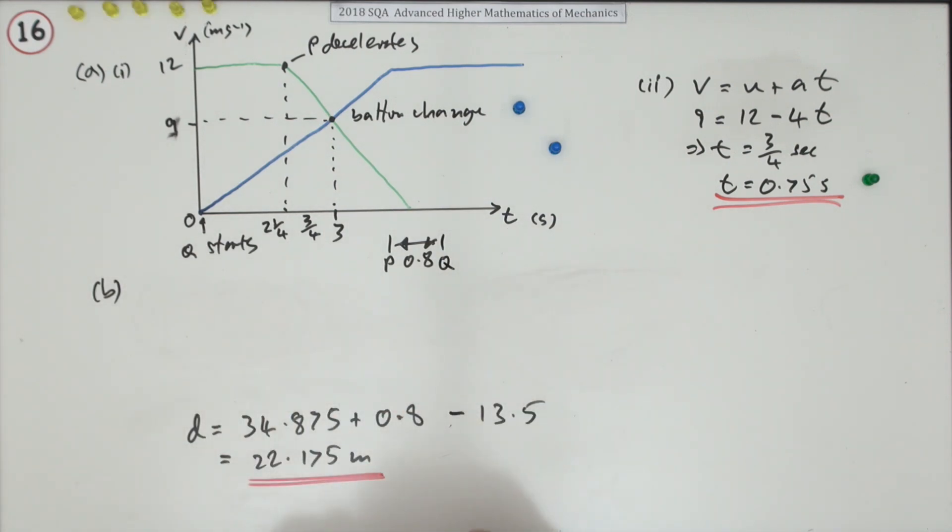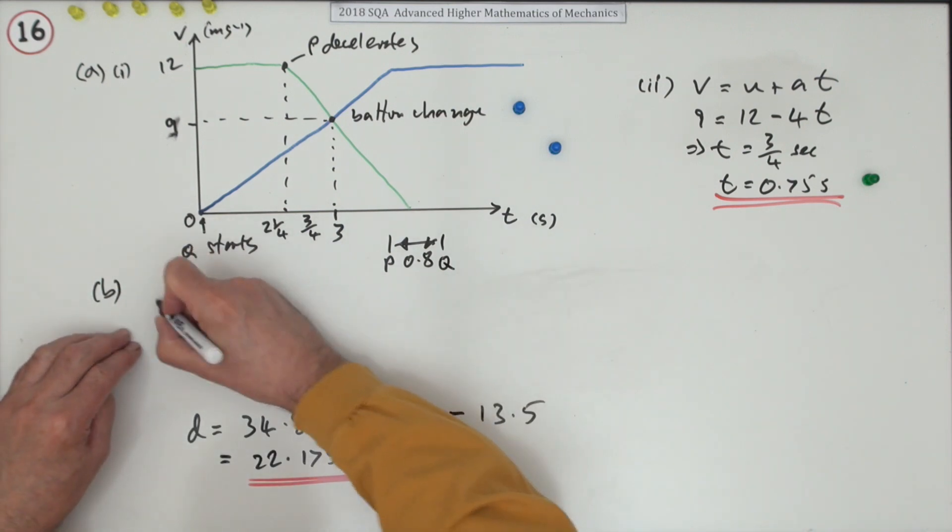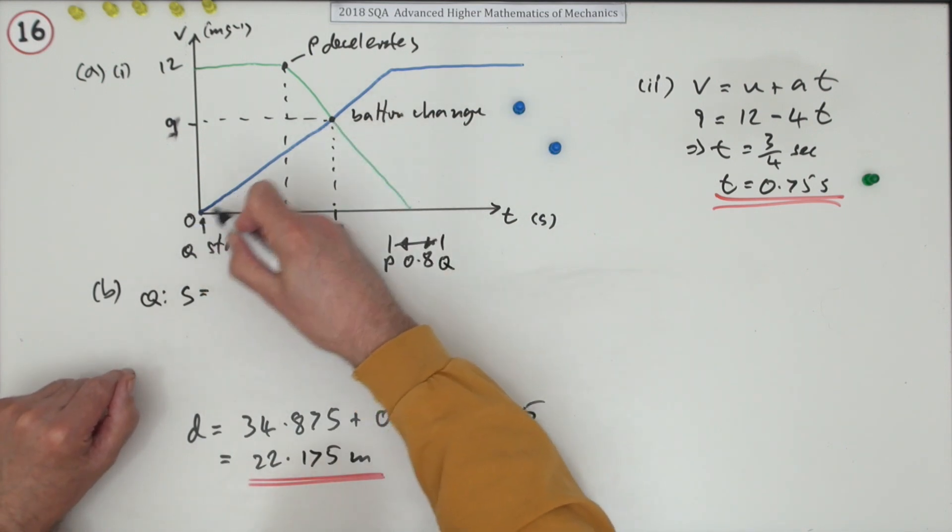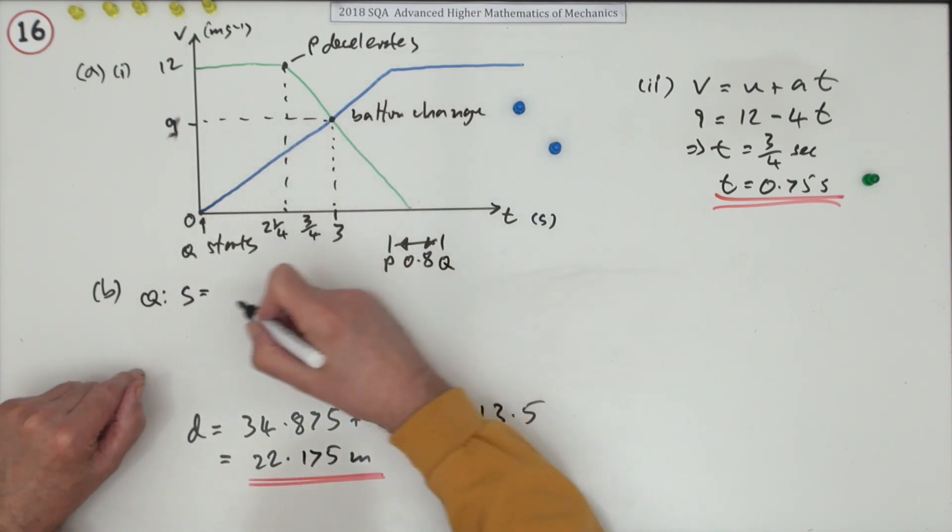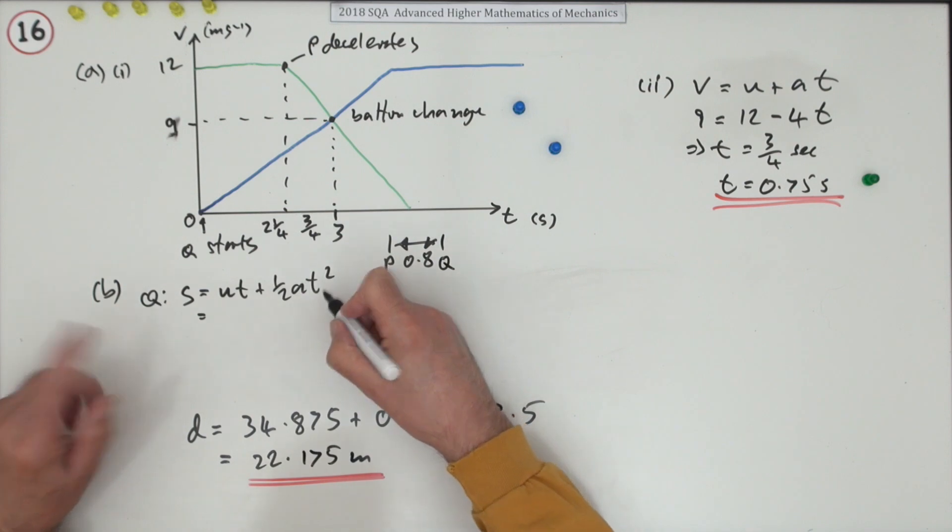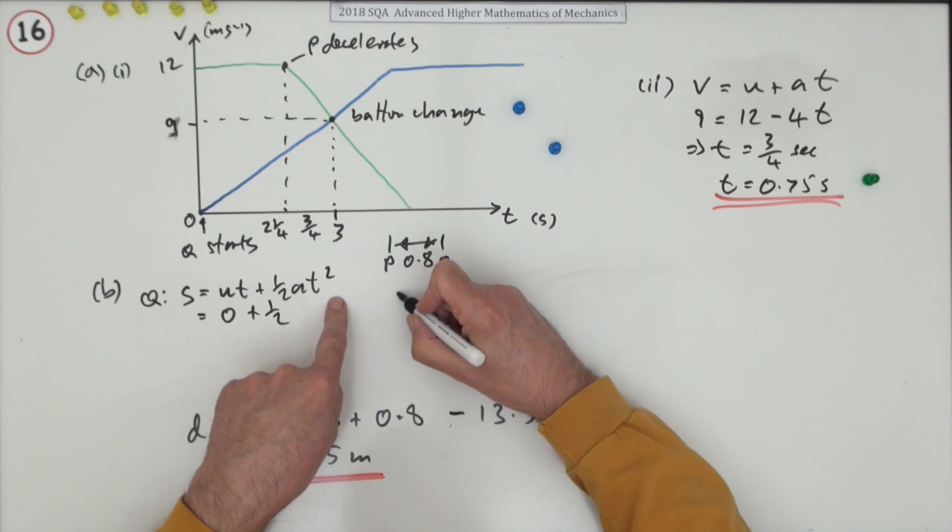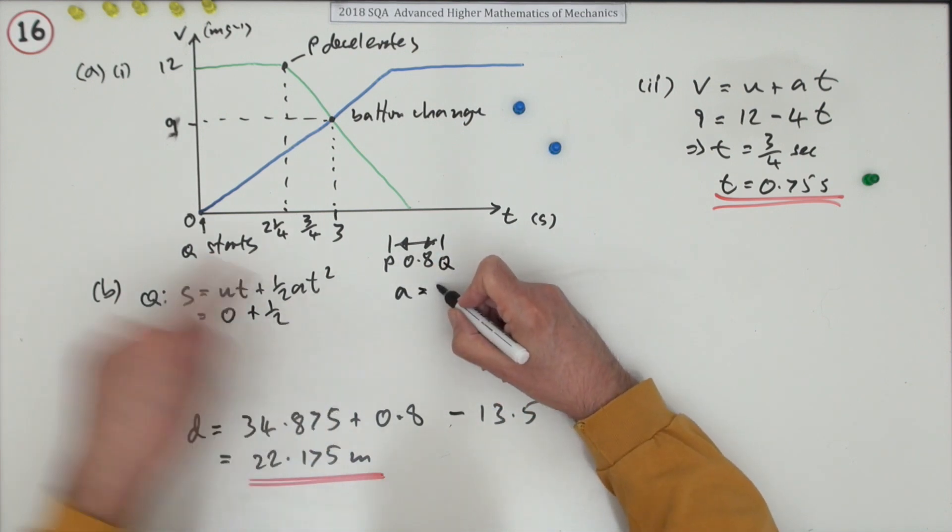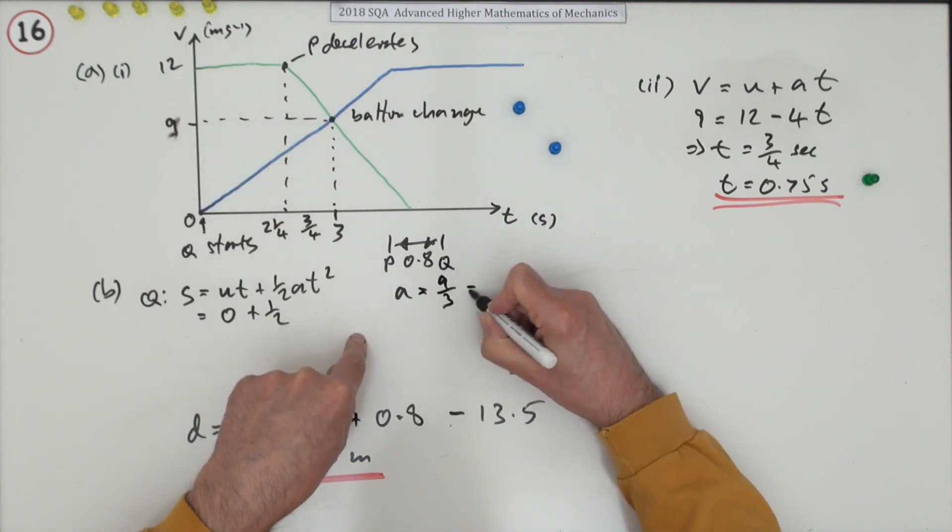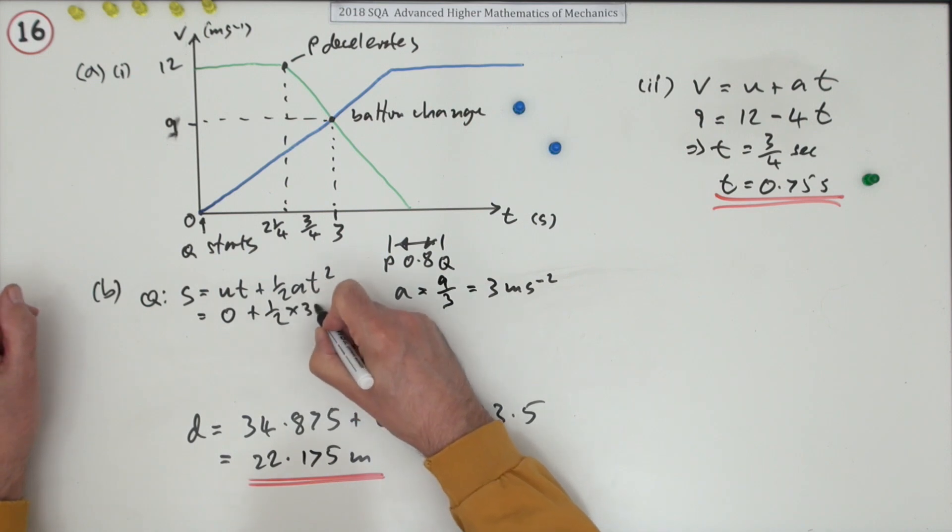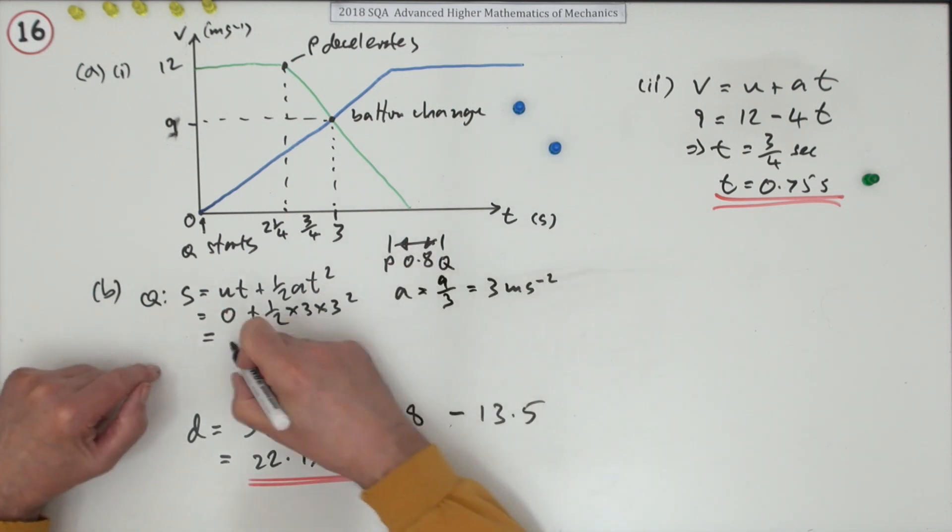But of course you didn't actually have to do that. You could have just used your equations. For Q, what was the distance travelled? S equals UT plus a half AT squared. Started at zero, plus a half of, and the acceleration will be the speed achieved divided by the time taken. So that's 3 meters per second squared. A half times 3 times 3 squared, which is the same thing, a half of 27. So that's 13.5.